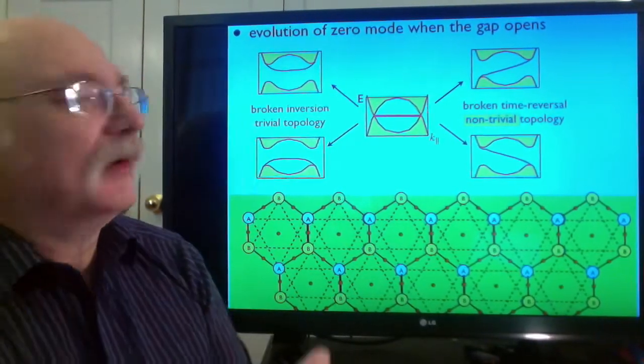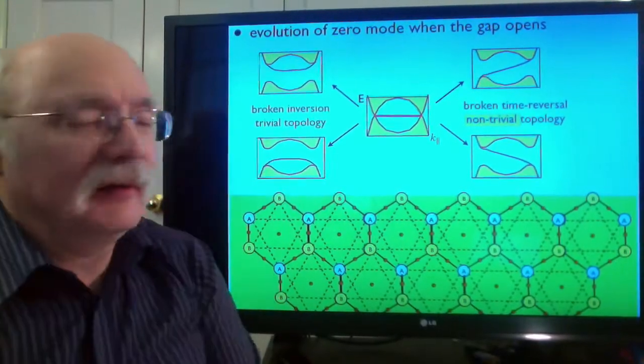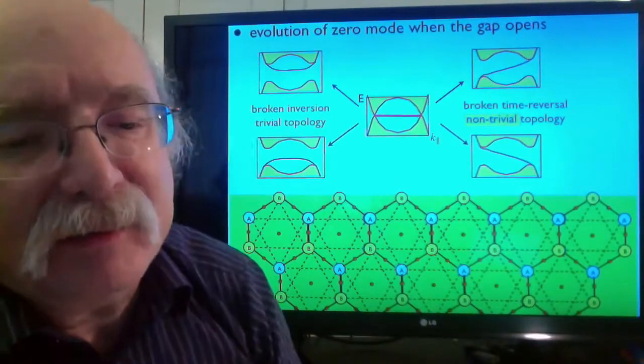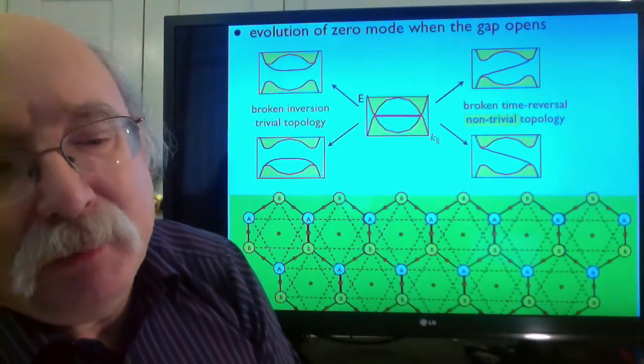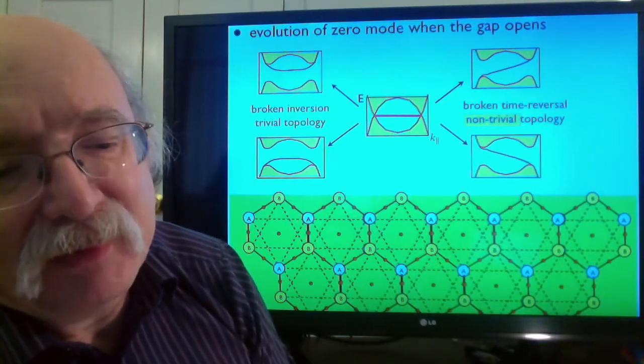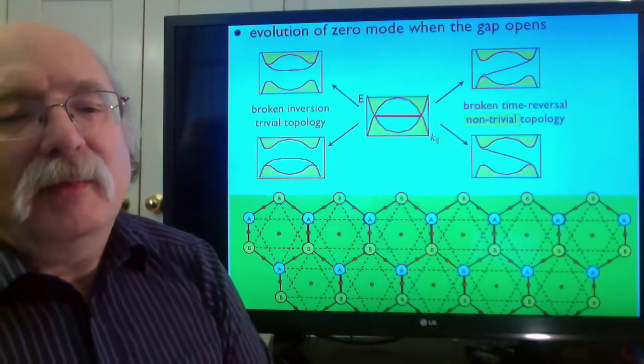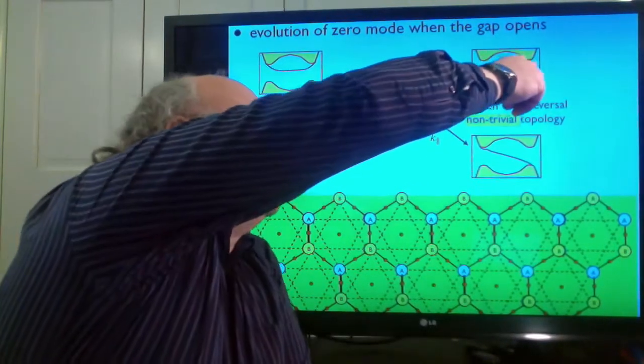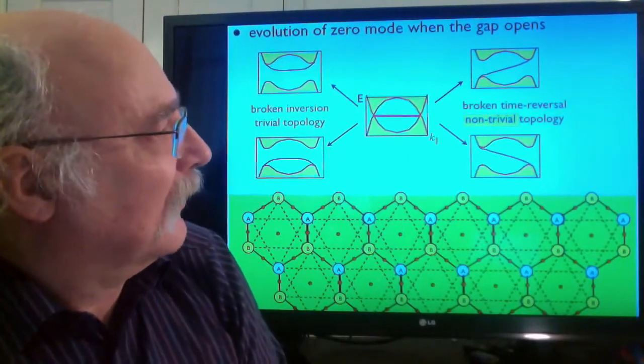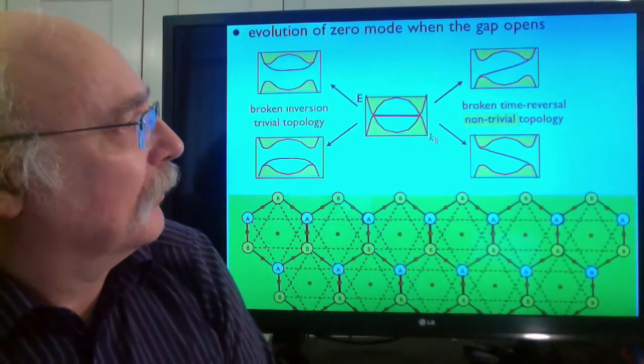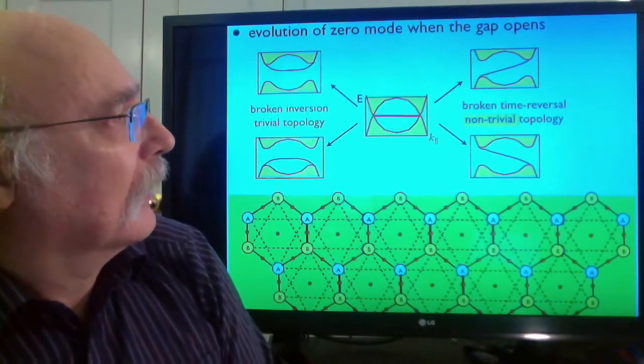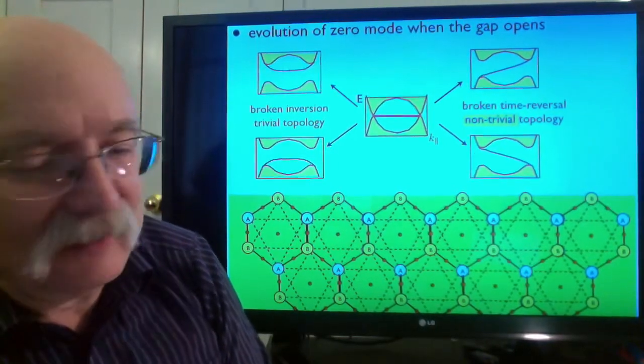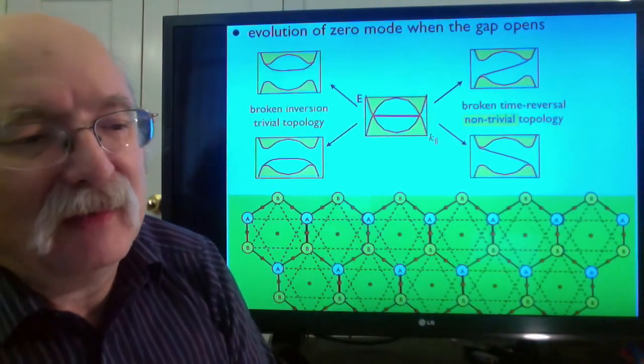If both connections are to the same band as in these two examples on the left, both connected to the conduction band or both connected to the valence band, this is the case where the gap was opened by breaking of inversion symmetry. Nothing special. But if the time reversal symmetry was the one that was broken, the edge mode becomes a conduit connecting the conduction and valence bands because one edge is attached to the projection of the Dirac point in the upper band and the other end is connected to the projection of the Dirac point in the lower band.